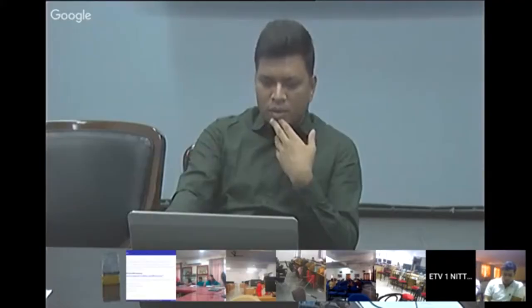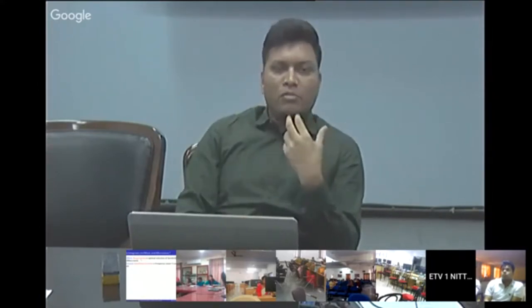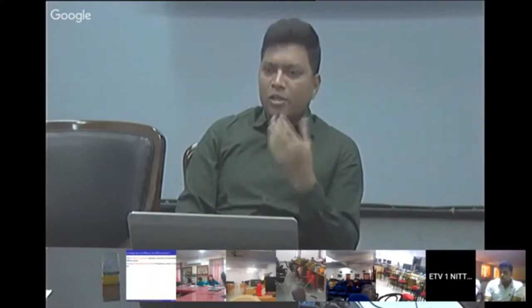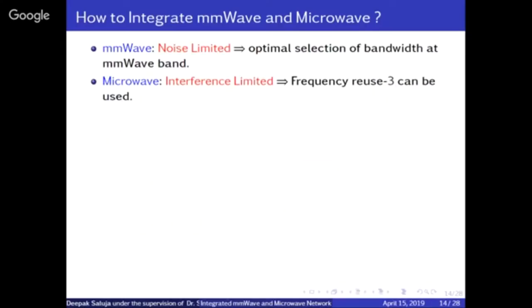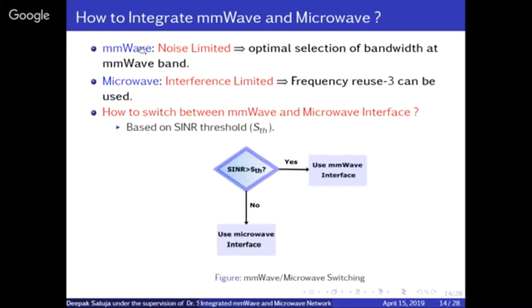Millimeter wave is noise-limited — there is no significant interference in millimeter wave because of blockage effect, signals get blocked so interference is minimal. Macro wave, on the other hand, is interference-limited. Among the two, macro wave is more reliable because blockage effect is not severe. So the approach is: measure the SNR of the user, and if SNR is higher than some threshold, use millimeter wave; otherwise use macro wave.